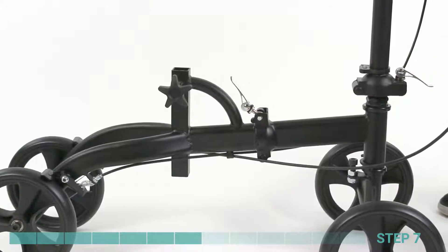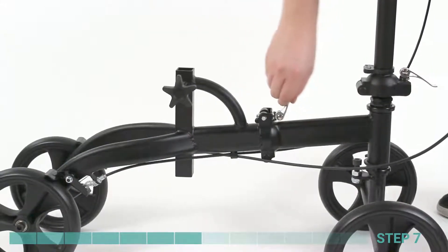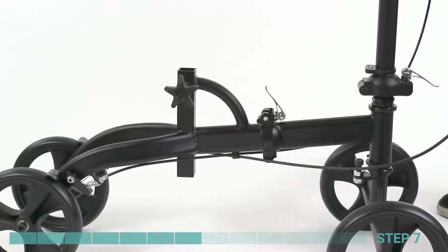Step 7. Repeat Step 6 with the tension lever at the folding joint between the front and rear axles.